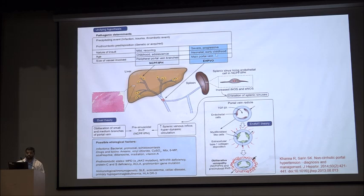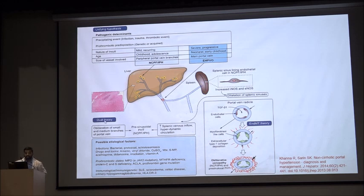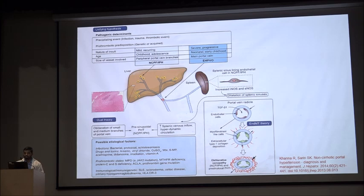There are three different hypotheses regarding pathophysiology. First, the unifying hypothesis by Prof. Suri: patients with major thrombus in the early neonatal period tend to develop EHPBO involving the main portal vein, while those developing thrombus later involving small and medium-size portal veins develop NCPF or IPH. Second, the dual theory by Shutan: involvement of small and medium-size portal veins combined with increased splenic blood flow gives rise to NCPF. Third, the endothelial-mesenchymal transition theory: portal vein endothelial cells transform into myofibroblasts, leading to type 1 collagen deposition, obliterative portal venopathy, and hence NCPF.